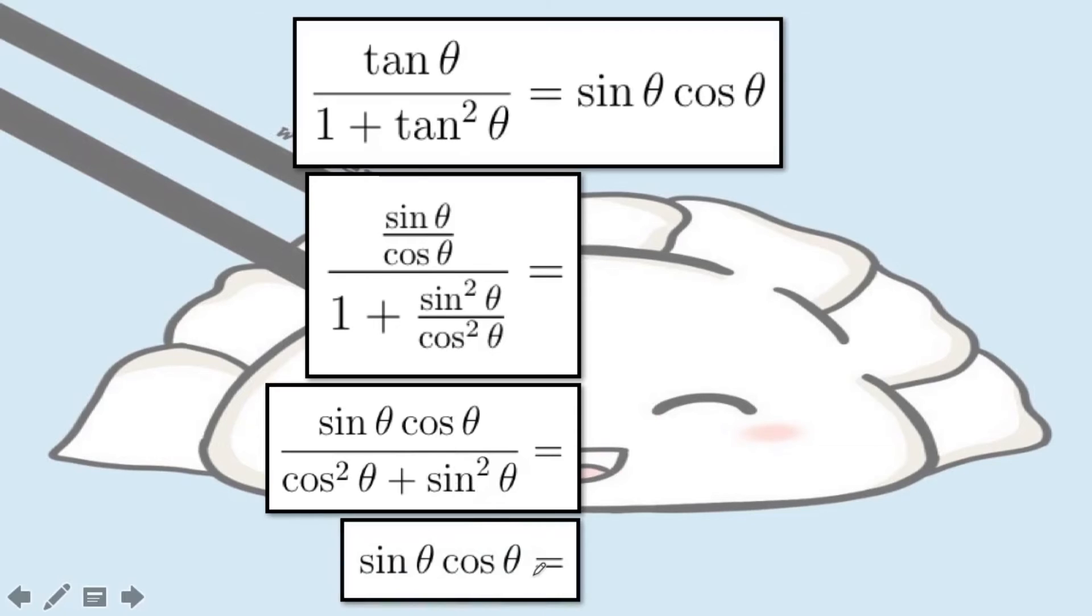So we've successfully shown that the right-hand side, which we did not manipulate, is equal to tangent theta over 1 plus tangent squared theta, since we're able to manipulate the given expression in a series of steps up to the final step. And this is how you prove a trigonometric identity.